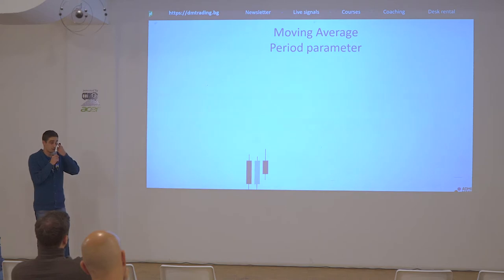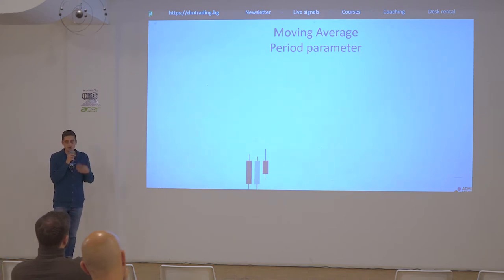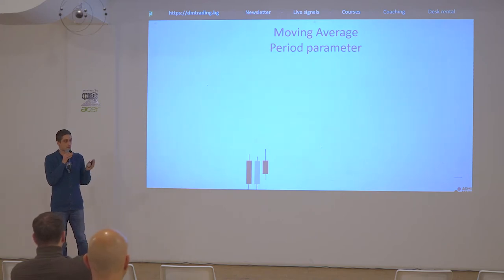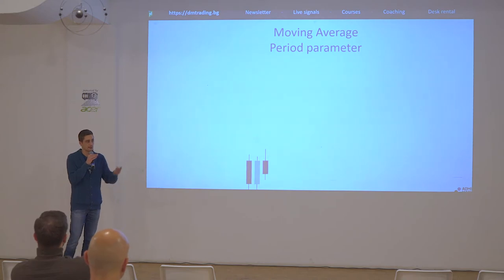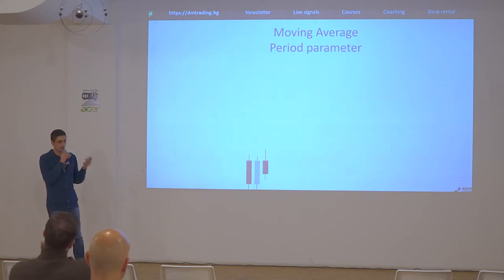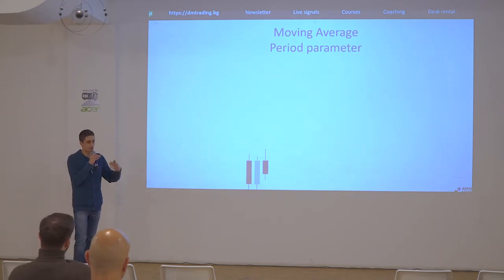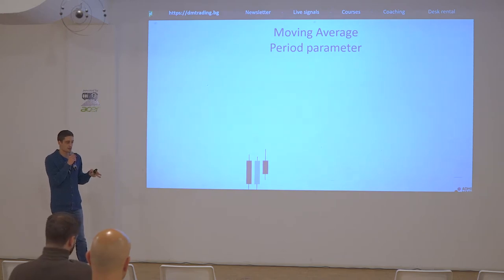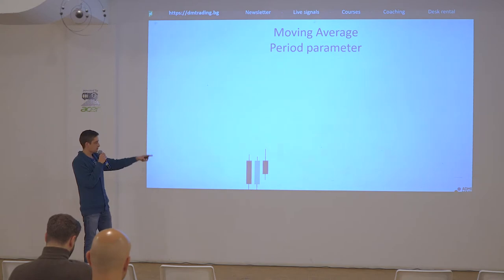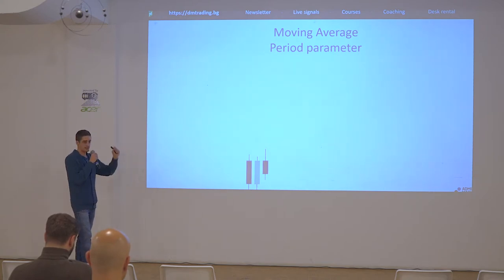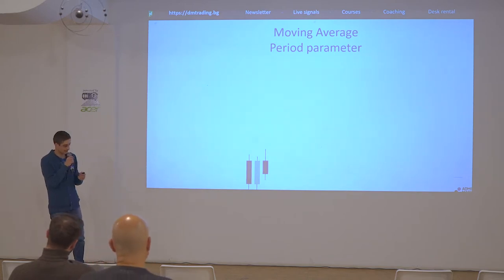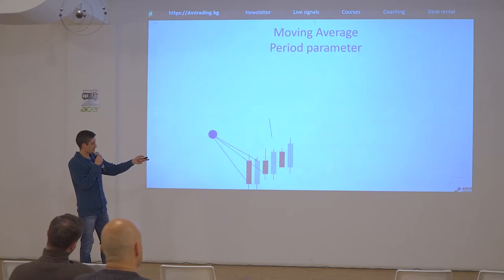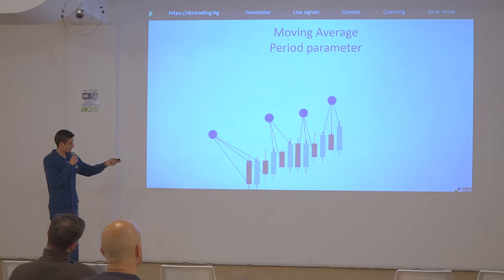Regarding the period parameter of the moving average — this is something you can change depending on your trading technique and preference. A period is basically a set of candles. If you set the period to three, it takes three candles, calculates the average of their closing prices, and that becomes the first dot of the line. Then it moves to the next three candles, takes their closings, makes a dot, and so on. You connect the dots, and that's your moving average.